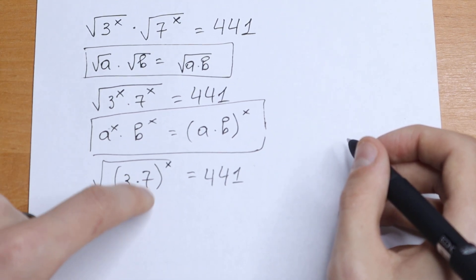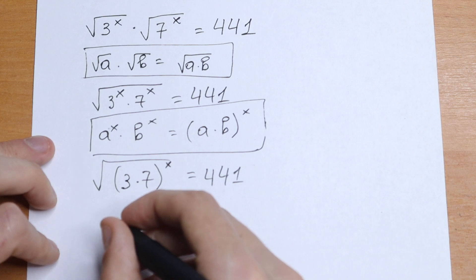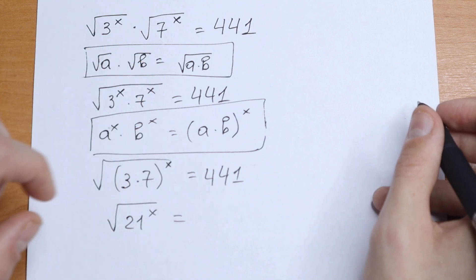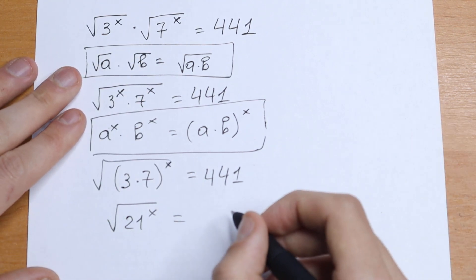We can multiply this. We will have 21 to the power x. So we have square root of 21 to the power x. And take a look right here. 441 is equal to 21 squared.